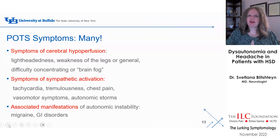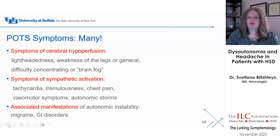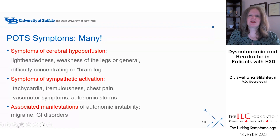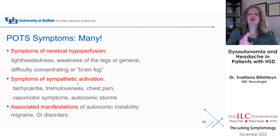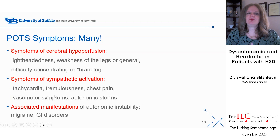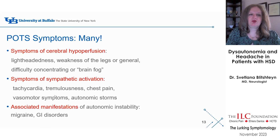POTS symptoms can be divided into symptoms of cerebral hypoperfusion — like lightheadedness, leg weakness, difficulty concentrating, or brain fog — and symptoms of sympathetic activation, meaning your fight-and-flight system has been activated. You feel on edge, shaky, have tachycardia, flushing, frequent urination, chest pain, and shortness of breath. That's what we call autonomic symptoms or symptoms of sympathetic overactivity. Patients can also have GI symptoms and migraine, which are also rooted in autonomic dysfunction.